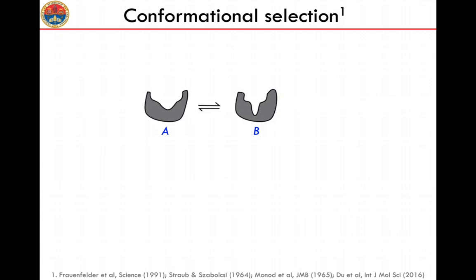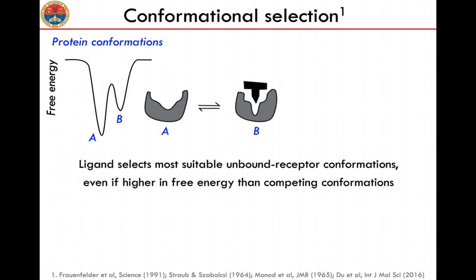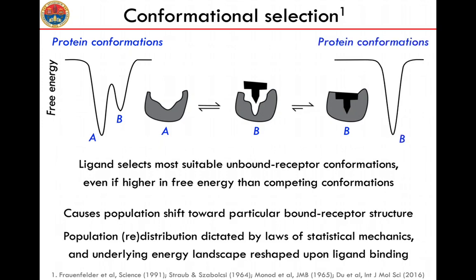Let's call these two states A and B. A is the state associated with the unbound protein and B is the state associated with the bound protein. The ligand will bind to B, even if B is not the preferred conformation in the absence of high concentrations of ligand. In the free energy sketch, B is higher in the free energy landscape than A. The binding will cause a population shift towards the bound receptor structure, causing a redistribution that obeys statistical mechanics, reshaping the underlying free energy landscape as the percentage of bound-like structures in the pool increases.